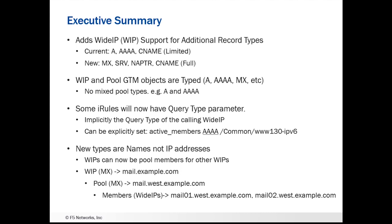Currently, in previous versions, wide IPs could answer A, Quad A, or CNAME requests. CNAME requests were somewhat limited in what they could answer with, but those were the types of queries that wide IPs could support.